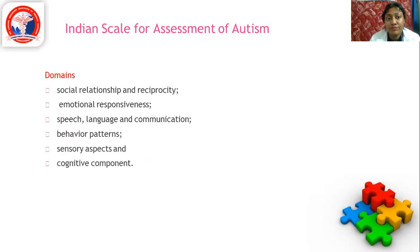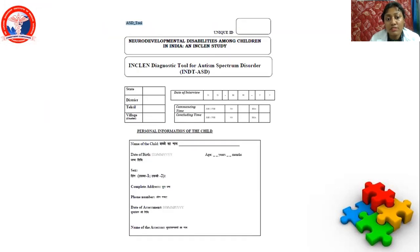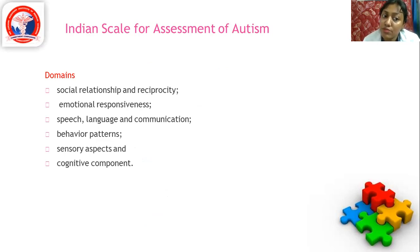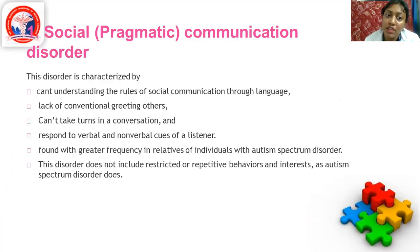Assessment tools include the Childhood Autism Rating Scale (CARS), the Autism Diagnostic Interview Revised (ADI-R), M-CHAT, STAT, and ADOS. M-CHAT and STAT are the most commonly used. In India, the INDT-ASD (Indian Neurodevelopmental Tool for ASD) is used, assessing social relationships, emotional responsiveness, speech, language, communication, behavior patterns, sensory aspects, and cognitive contact.